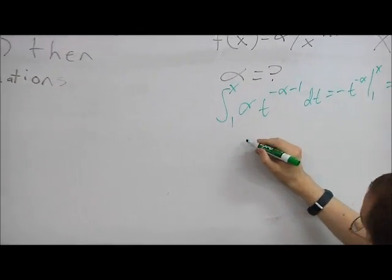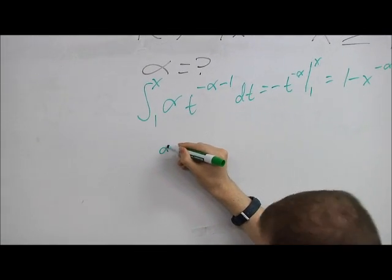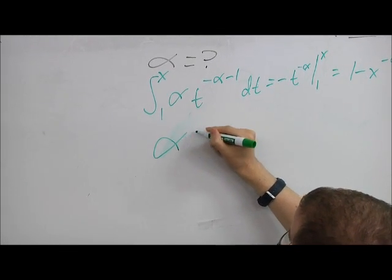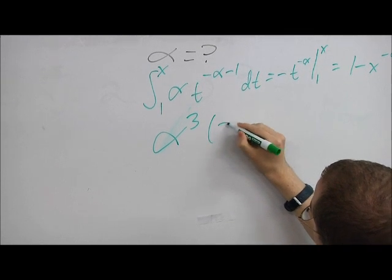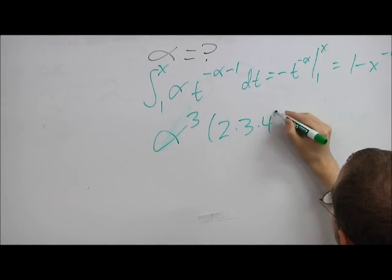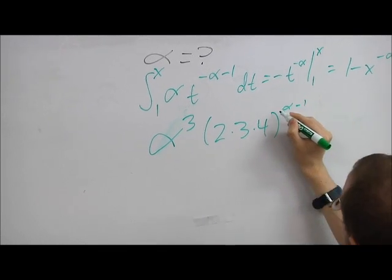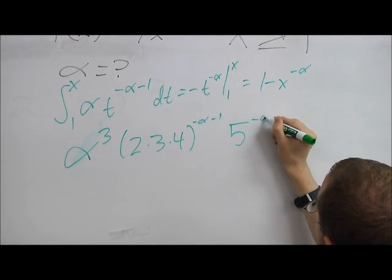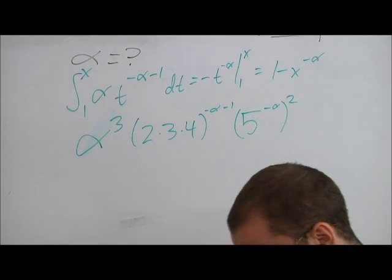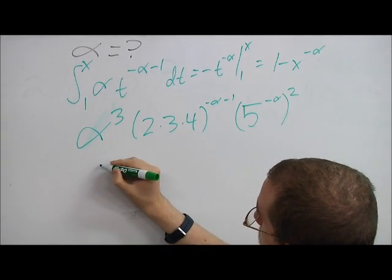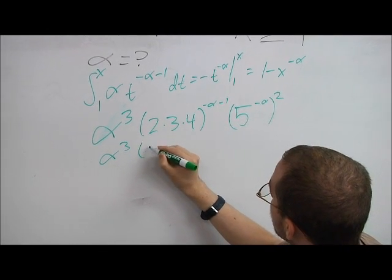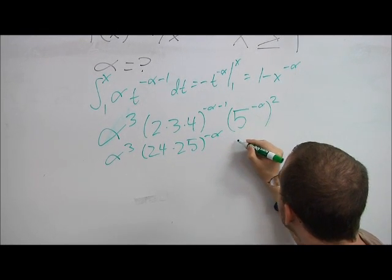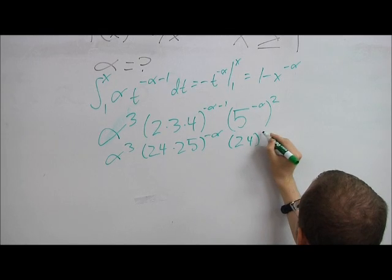So what we wind up getting is alpha cubed times 2 times 3 times 4 to the negative alpha minus 1 times 5 to the negative alpha cubed. So it's going to be alpha cubed times 2 times 3 times 4 to the negative alpha minus 1 times 5 to the negative alpha squared, which can be simplified.